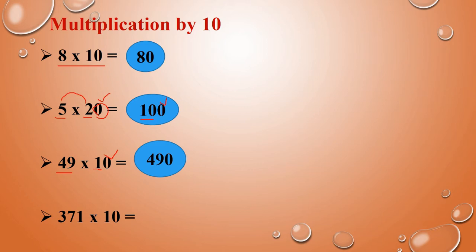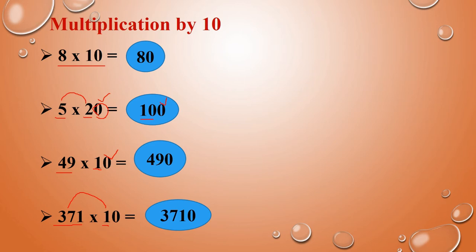Next: 371 into 10. 371 into 10 means — 1 into 371, that is 371. So here there is a zero. We have to add that zero. So the answer is 3710. Like this, you have to multiply by 10.